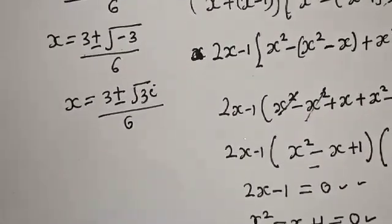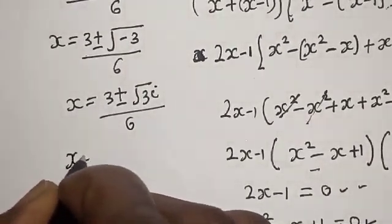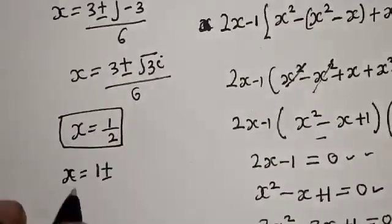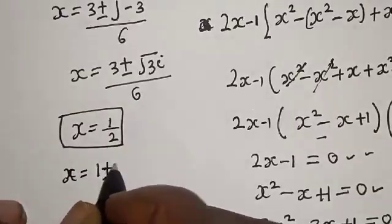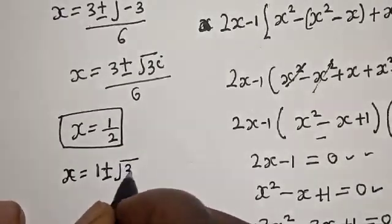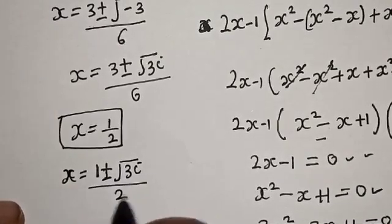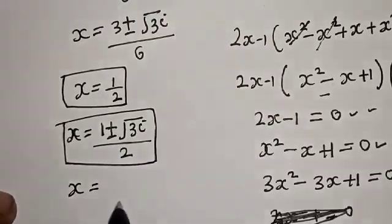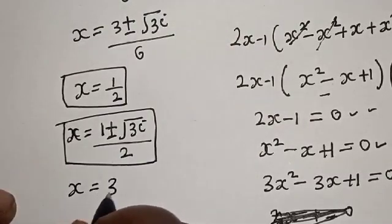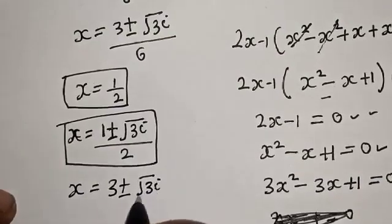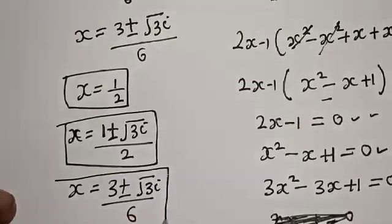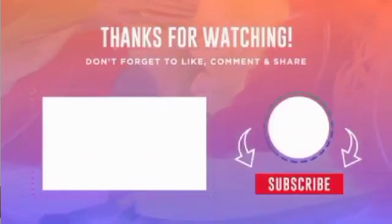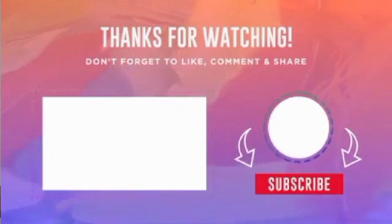Therefore our final answers are: x equals 1/2, which is the only real solution; x equals 1 plus or minus square root of 3i over 2; and x equals 3 plus or minus square root of 3i over 6. These are the values of x — one real solution and four imaginary solutions. If you enjoyed the class, please don't forget to like, share, comment and subscribe. Thank you.